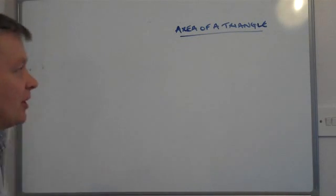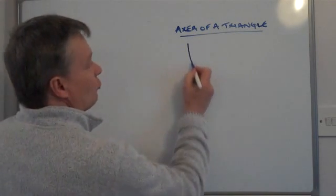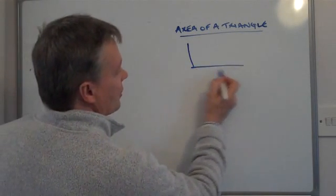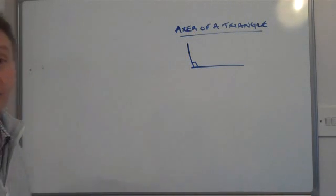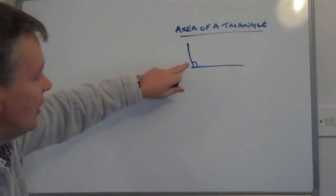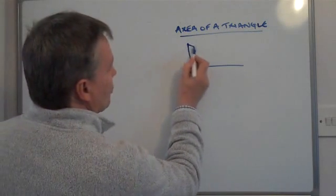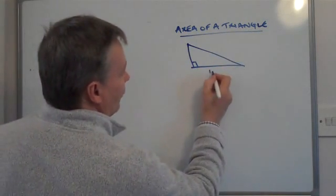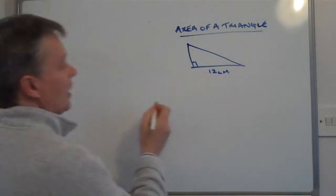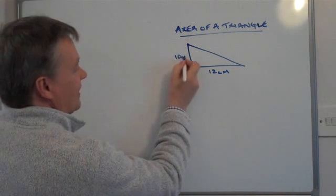For this example, I'm going to use a right-angled triangle, where one of the angles is at 90 degrees, indicated by that little square symbol there. This particular triangle has a base length of 12 centimeters and a height of 10 centimeters.